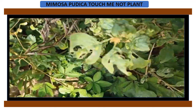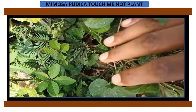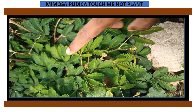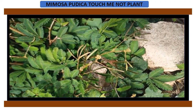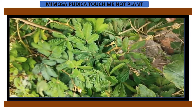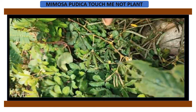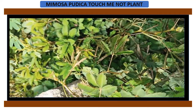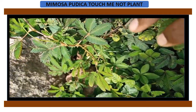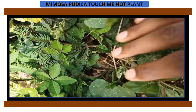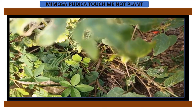Touch-me-not plant shows nastic movement by touch — this is called thigmonasty. When we touch the leaves, an electric impulse is generated. This impulse acts on a plant hormone, causing water in the pulvini cells closer to the leaf vein to migrate to the other side of the cell. Then the pulvini lose their firmness and the leaves fold.